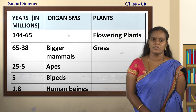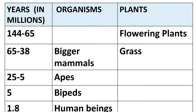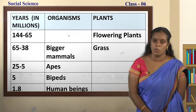Between 144 to 65 million years ago, the flowering plants evolved on the earth. Between 65 to 38 million years ago, bigger mammals and grass evolved. Between 25 to 5 million years ago, it was apes — monkeys without a tail. Five million years ago, it was bipeds. Bipeds are animals which move with the help of their two legs. In 1.8 million years ago, human beings evolved on the earth.